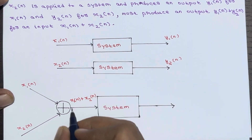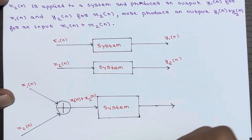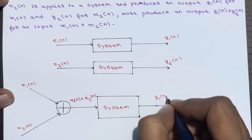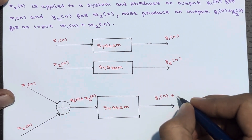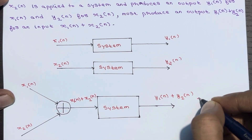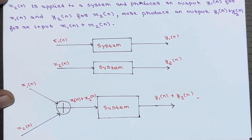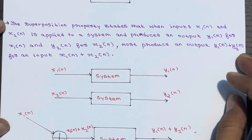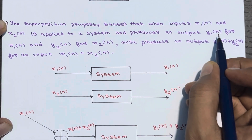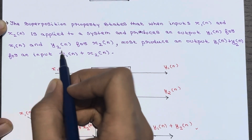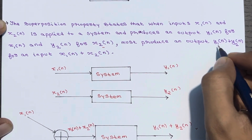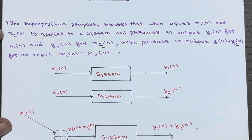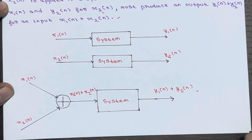When applying x1(n) the output was y1(n), and when applying x2(n) the output was y2(n), so for the combined input the output will be y1(n) plus y2(n). The superposition property states that when x1(n) and x2(n) are applied separately producing y1(n) and y2(n), the system must produce y1(n) plus y2(n) for the combined input x1(n) plus x2(n).